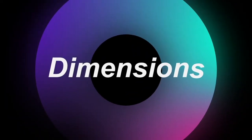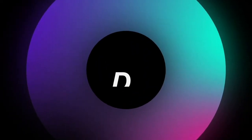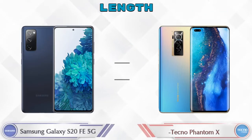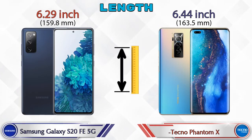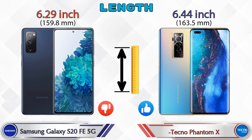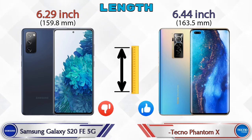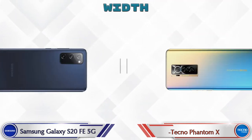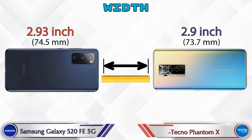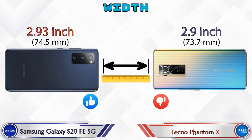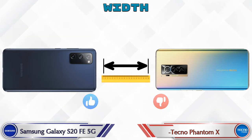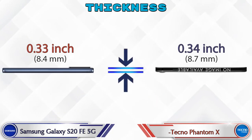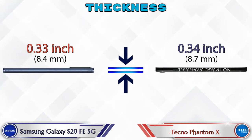Now let's check the details about dimensions. Talking about the length: the S20 FE 5G is 6.29 inches and the Phantom X is 6.44 inches. Width: the S20 FE 5G is 2.93 inches and the Phantom X is 2.9 inches, which is less than the S20 FE 5G.